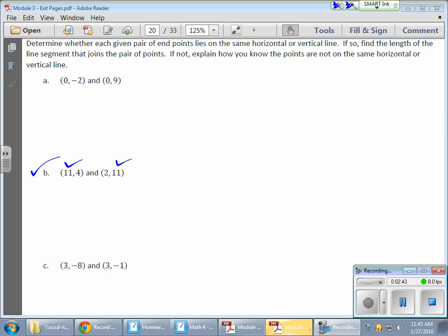This one, I have two 11s, but one of them is on the x-axis, and one of them is on the y-axis. So these guys don't even form a vertical or a horizontal for me, so I can't even find the distance for this guy. Because 11, 4, that's going to wind up over here somewhere.